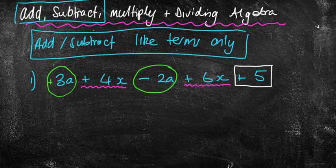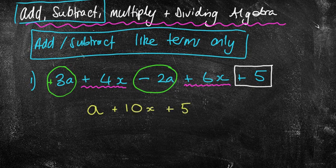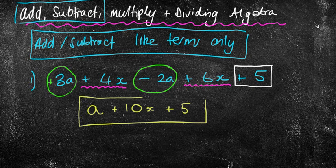So I'm going to simplify this by doing 3a take away 2a which is 1a. I can just write the a. If you want to have a 1 there you certainly can but it's not needed. I'm going to put here for the next one 4x plus 6x is plus 10x and then I've got plus 5 at the end and that is my final answer. So again we've added and subtracted like terms only. Pretty straightforward right?